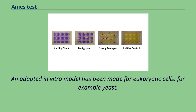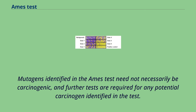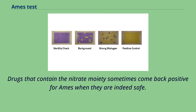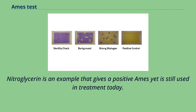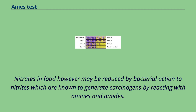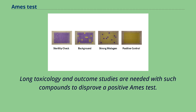An adapted in vitro model has been made for eukaryotic cells, for example yeast. Mutagens identified in the Ames test need not necessarily be carcinogenic, and further tests are required for any potential carcinogen identified in the test. Drugs that contain the nitrate moiety sometimes come back positive for Ames when they are indeed safe. The nitrate compounds may generate nitric oxide, an important signal molecule that can give a false positive. Nitroglycerin is an example that gives a positive Ames result yet is still used in treatment today. Nitrates in food however may be reduced by bacterial action to nitrites, which are known to generate carcinogens by reacting with amines and amides. Long toxicology and outcome studies are needed with such compounds to disprove a positive Ames test.